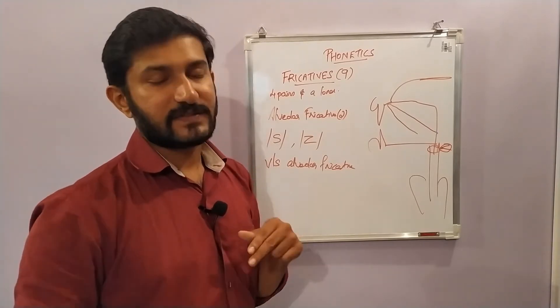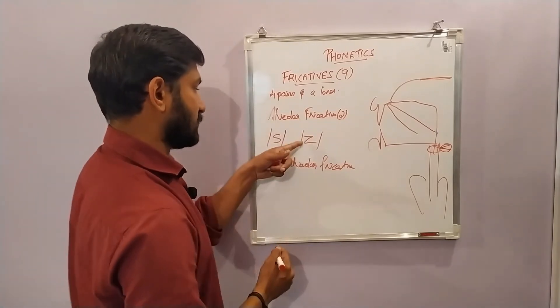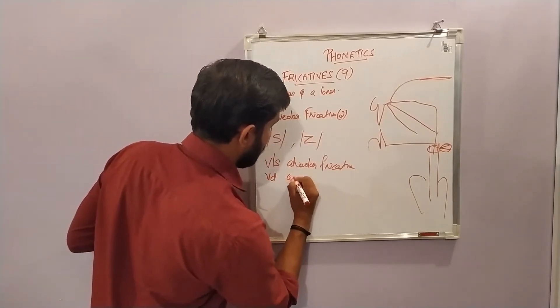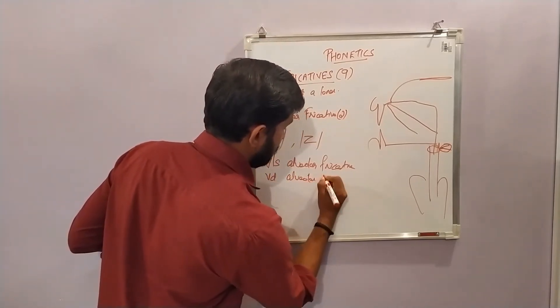In the case of /z/, the vocal cords lie close together. The air escapes after vibrating the vocal cords, so /z/ can be described as a voiced alveolar fricative.